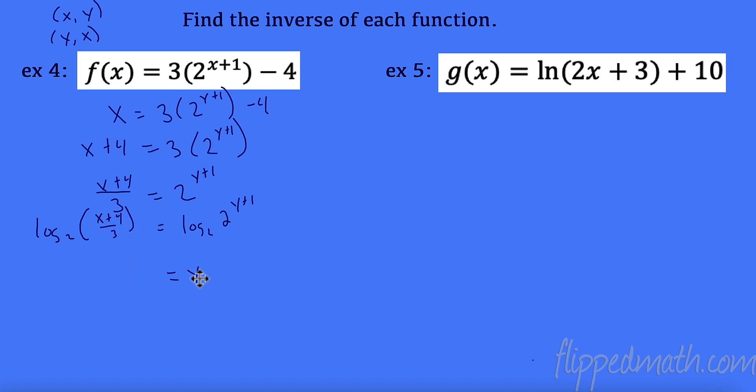So now I have y plus 1 equals all of that. And last but not least, the opposite of minus plus 1 is minus 1. So log base 2 of x plus 4 over 3, all that's inside, then I subtract 1 on the outside to equal y or my inverse function of f of x.